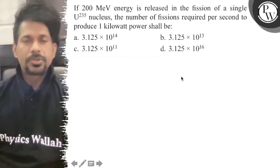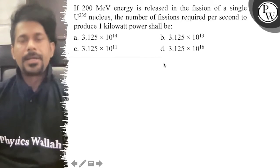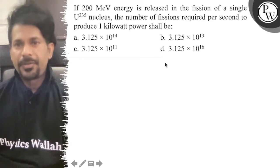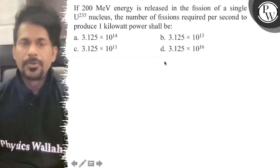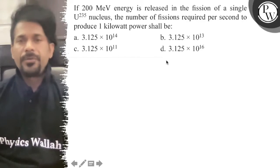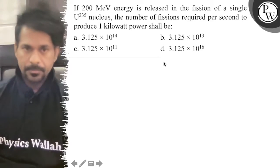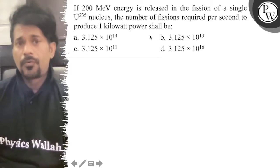Hello, let's see the question. If 200 MeV energy is released in the fission of a single uranium-235 nucleus, what is the number of fissions required per second to produce 1 kW of power?